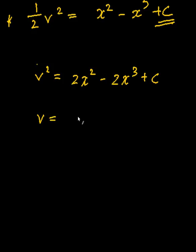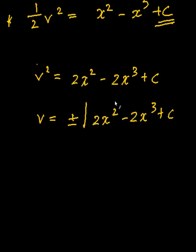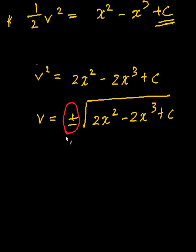Simplifying: v² = 2x² − 2x³ + c. So velocity equals plus or minus the square root of (2x² − 2x³ + c). Depending on the question, sometimes only the positive root applies; sometimes if they ask for speed, the direction doesn't matter and you just need the absolute value. That's it for acceleration in terms of displacement — if you have any questions let me know, and in the next video I'll probably do a simple harmonic motion question.